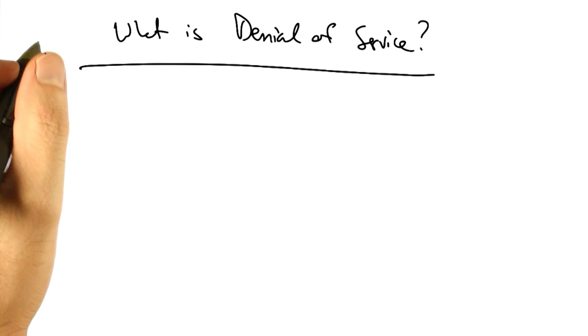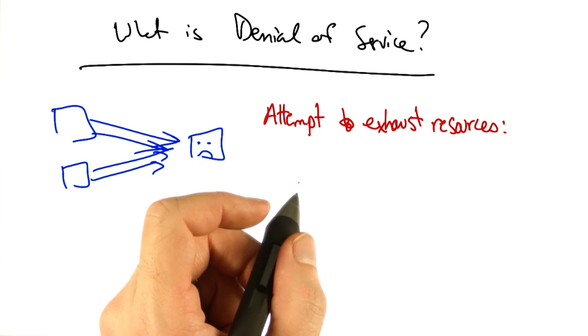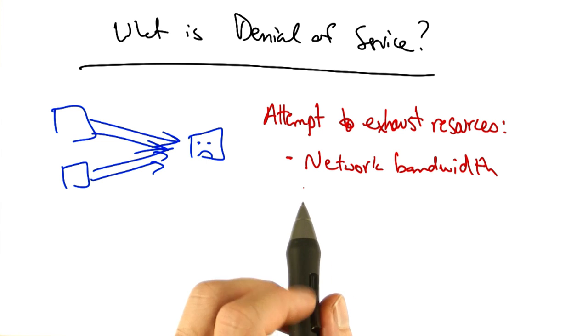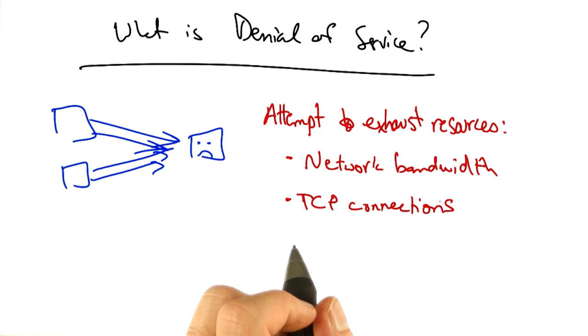So what is denial of service? Denial of service is simply an attack that attempts to exhaust various resources. One resource that a denial of service attack might exhaust is network bandwidth. Another is TCP connections.